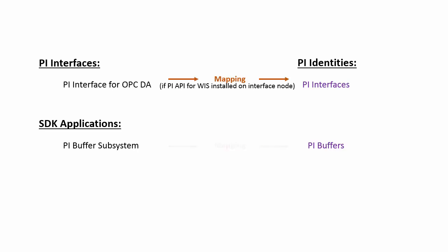We will also be using a mapping for the PI Buffer subsystem. A mapping requires that we are using version 3.4.380.79 or later for PI Buffer subsystem. Before we get started, let's confirm I have indeed installed PI API for Windows Integrated Security on the interface node.